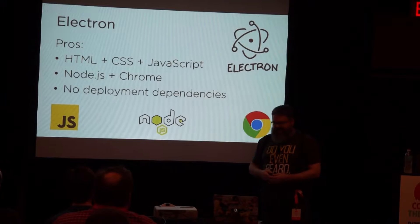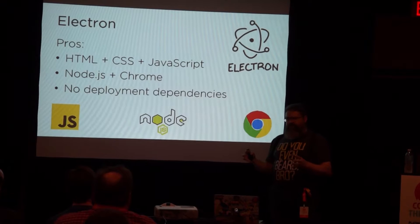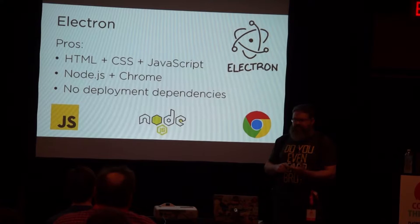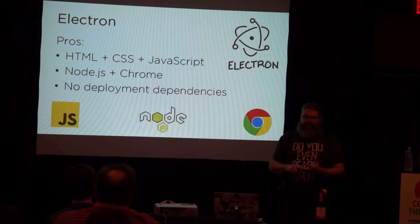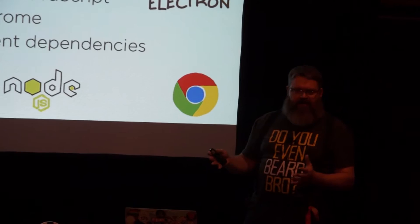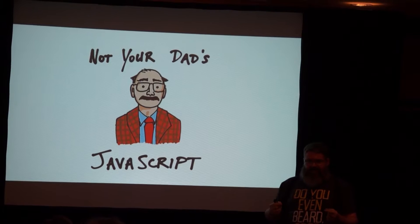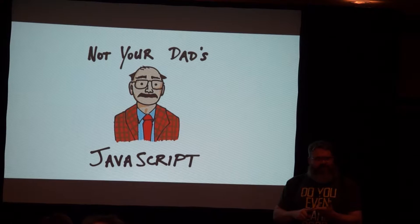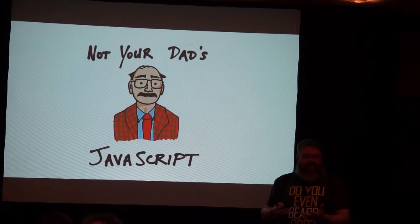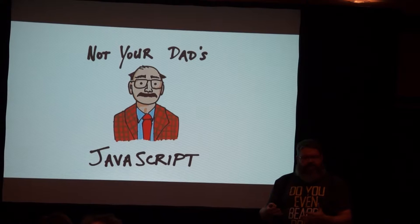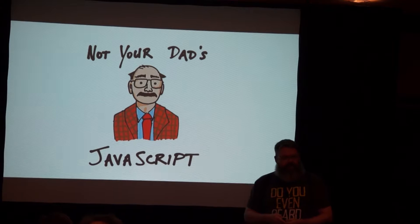There are no deployment dependencies. When you create your application, Node.js and Chrome are bundled into that application and it's a standalone app. The person using your application doesn't have to have Node installed, and they don't even have to have Chrome installed. Also, you're building against the latest version of the V8 engine, so you have like 95-plus percent of ES6 support right out of the gate. You don't have to do Babel or anything like that to transpile your JavaScript. You can write ES6 type JavaScript, which is really awesome.